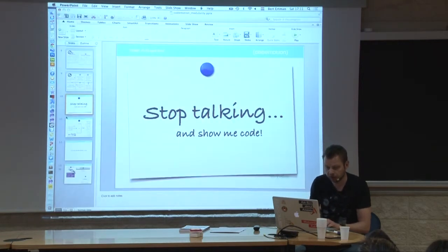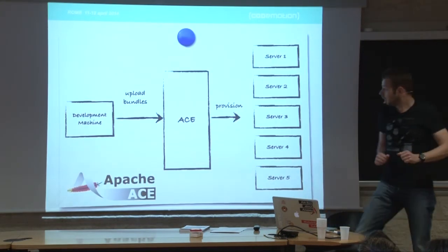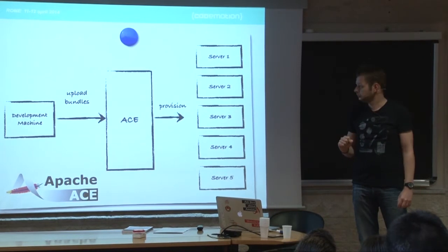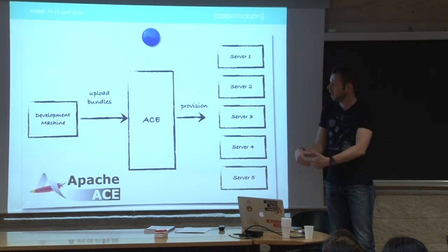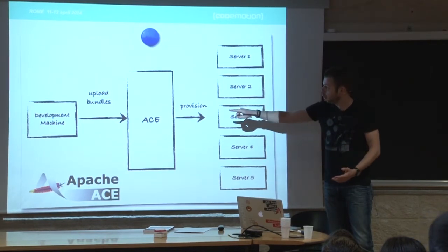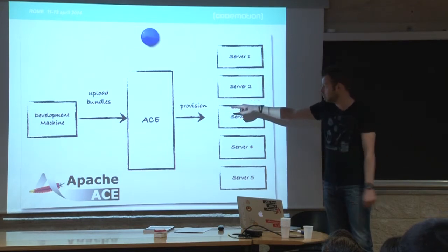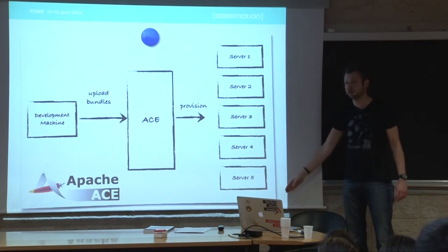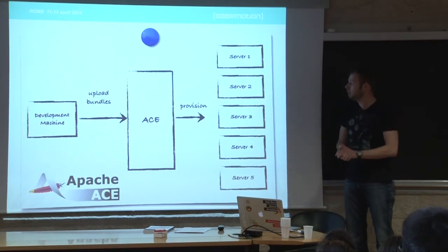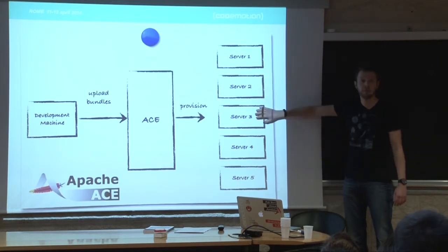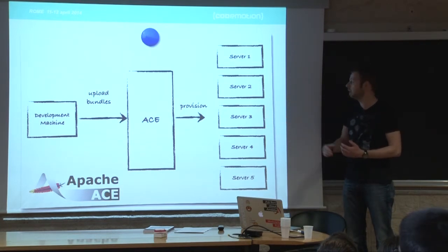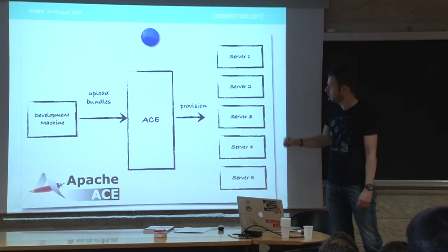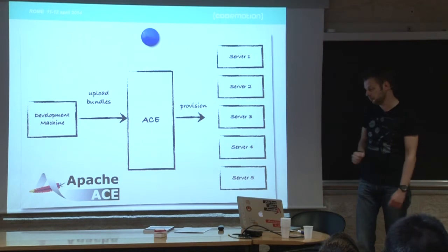Let me switch back to slides for one second. What I'm going to use next is something called Apache ACE - a provisioning and deployment server. My development machine is on the left; I exported the list of bundles and will upload them into the Apache ACE repository. Then I have a number of targets - nodes running in the cloud - which can be one server or a whole bunch. It can be anything that can run a Java virtual machine: a tablet, a Raspberry Pi, or whatever embedded device can connect to the internet. You connect these to the ACE server using an agent callback system, and then ACE can start provisioning software to the nodes.